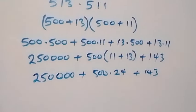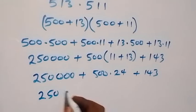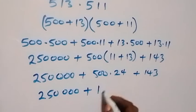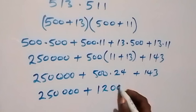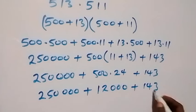And here, we have 250,000 plus 500 times 24. We have 12,000. Then, plus 143.